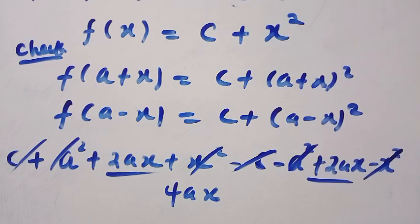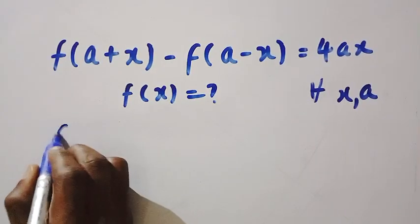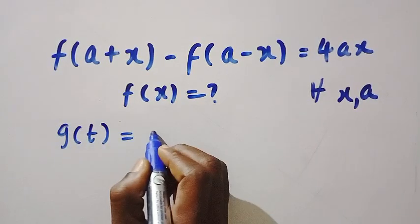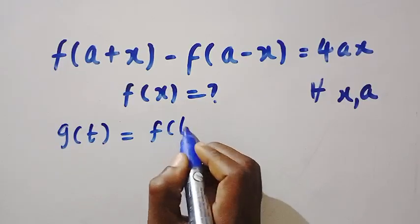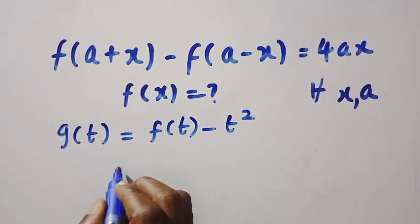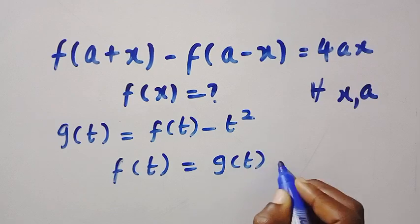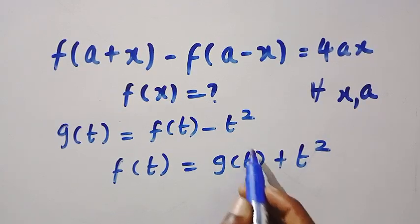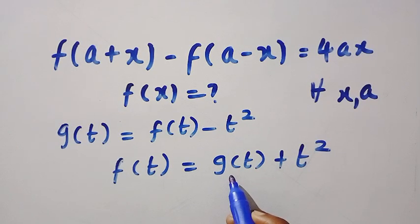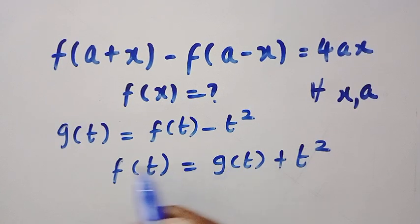But is this the only solution? Let g of t equal f of t minus t squared, so f of t equals g of t plus t squared. Substituting into the original equation with f of a plus x and f of a minus x, we expand and find that the squared terms cancel each other out.